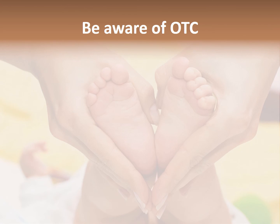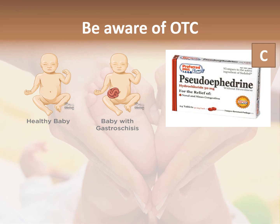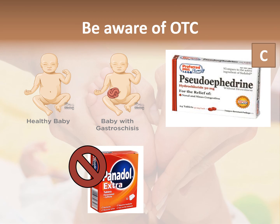Be aware of OTC drugs too, because they may contain risky components. For example, Pseudoephedrine, a decongestant of Category C, decreases placental blood flow, affecting the development of blood vessels and leading to gastroschisis — an opening beside the umbilical cord that allows the intestine to protrude to the outside. It's also preferable to avoid Panadol Extra, because it contains a high dose of caffeine that may cause teratogenicity or premature labor.